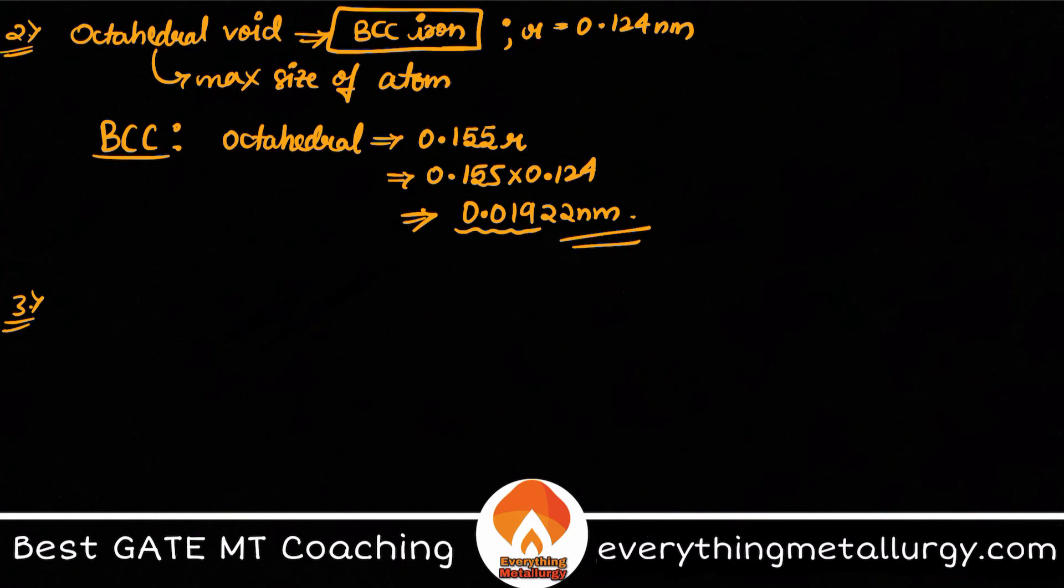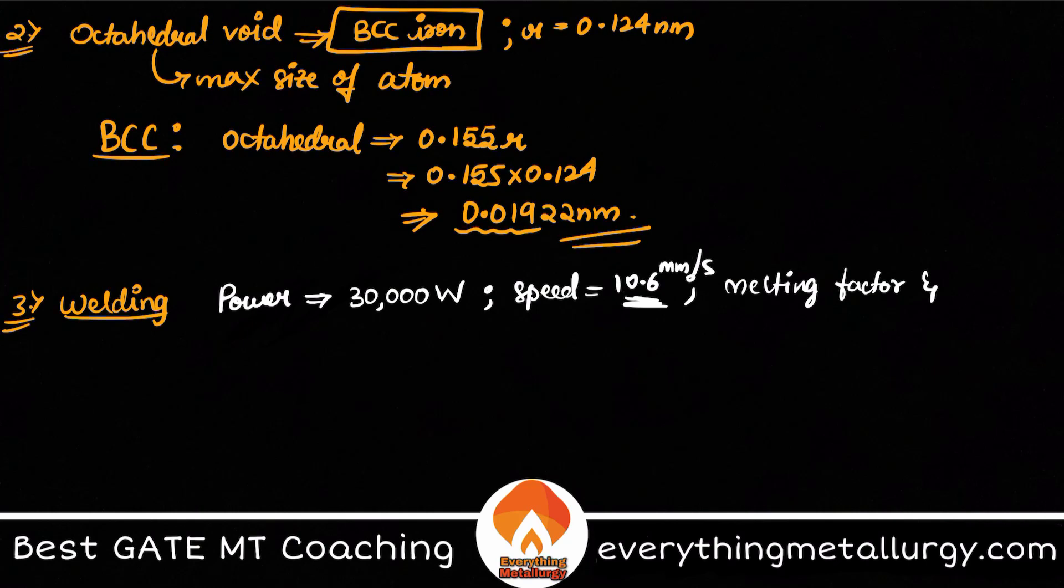The next question is an interesting question based on welding. What they gave is the power, which is about 30,000 watts, and they also gave speed. I do not remember the speed exactly - I think the speed is 10.6 mm per second if I'm not wrong. Melting factor is given and also the heat transfer factor is given. And they want the area of cross section. You need to calculate the area of cross section. So how to go about and calculate area of cross section from power, speed and everything? It is pretty much easy.